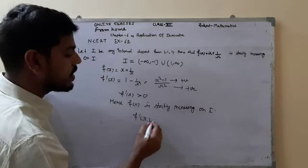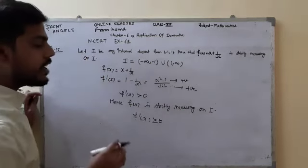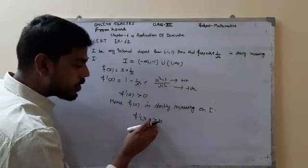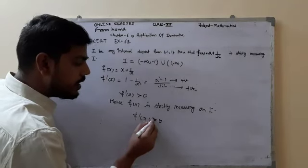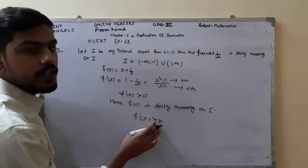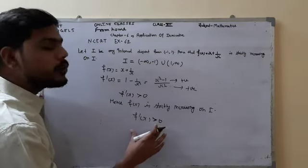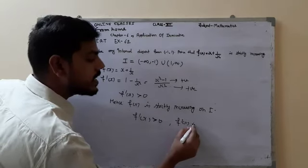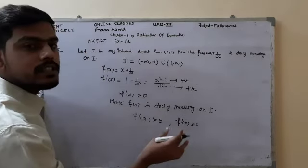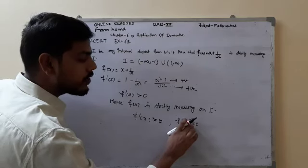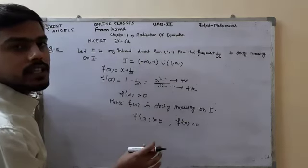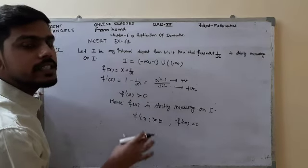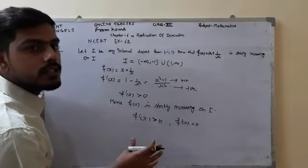So hence f(x) is strictly increasing on I. To clarify: if f'(x) ≥ 0 (greater than or equal to 0), then we say the function is increasing but not strictly. If there is no equals sign and f'(x) > 0 only, then the function is strictly increasing. If f'(x) < 0, then the function is strictly decreasing. I hope the distinction is clear. Please pause the video and note it down.